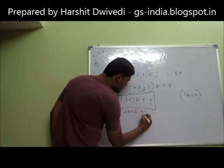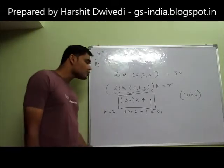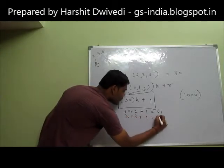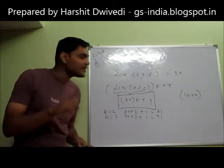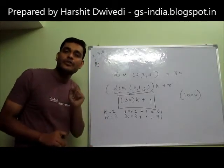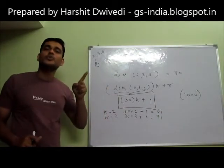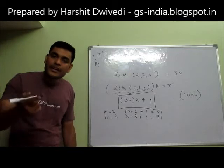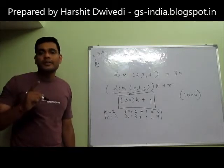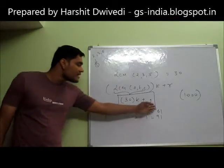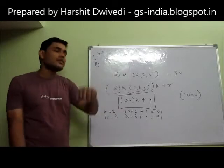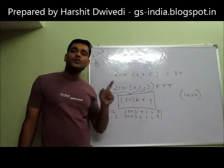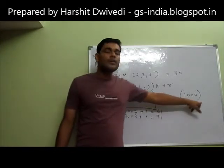At K=2: 30×2 + 1 = 61. At K=3: 30×3 + 1 = 91. So 31 is the first number, 61 is the second number, and 91 is the third number which when divided by 2, 3 and 5 leaves a remainder of 1. Similarly 121 is the fourth, 151 is the fifth — because they are increasing at intervals of 30. By changing the value of K, we have to reach a number which satisfies this form and is above 1000.